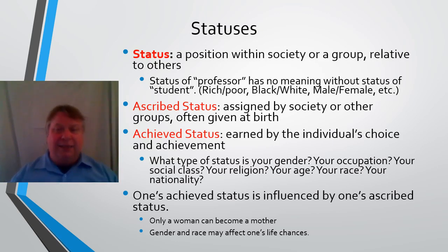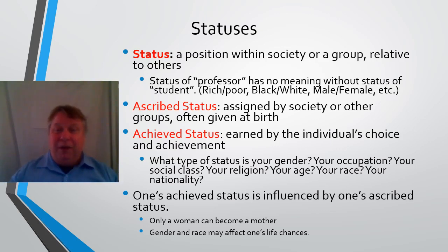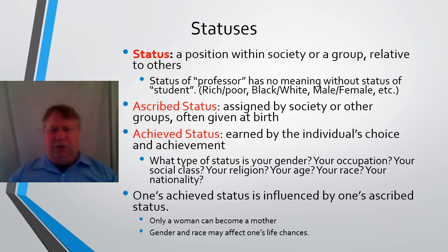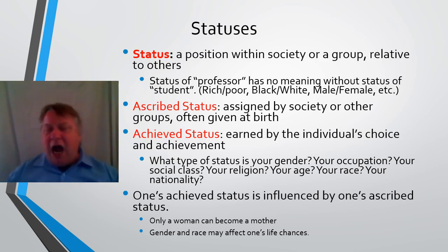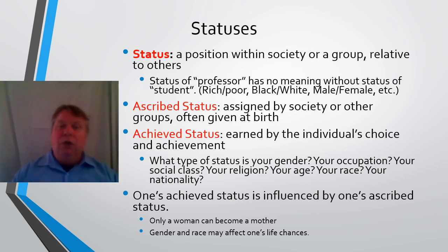Some of these statuses are basically given to you at birth by society — society assigns you a status. For example, I was assigned the status of being male. It isn't just the biology, because if it were just the biology, why do they put all these expectations on me? I'm supposed to act a certain way, be strong, not cry, grow up and get a job. If I'm a woman, I would have different expectations. That's what I mean by an ascribed status — the expectations that are going to be given to you.